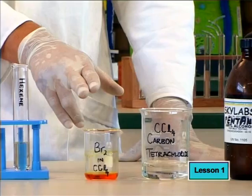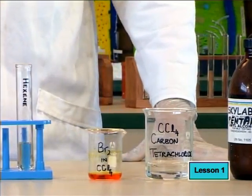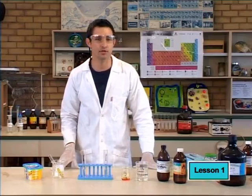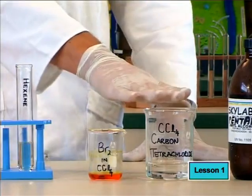We use bromine to test for an unsaturated compound like hexene. Bromine is a very dangerous chemical and can't be used alone. So first, we've added it to a solvent called carbon tetrachloride.